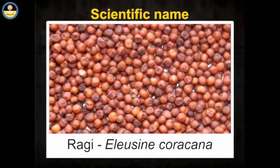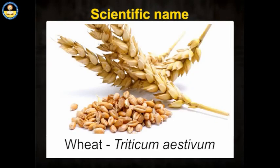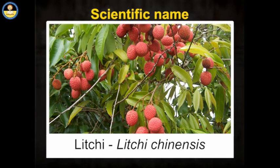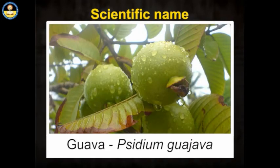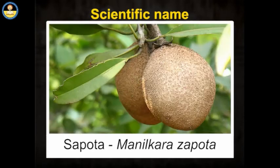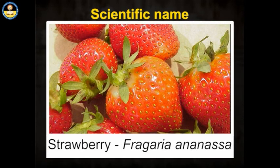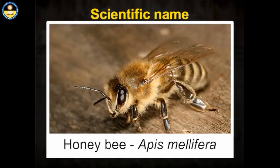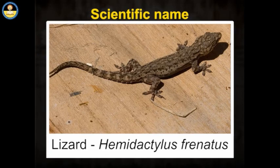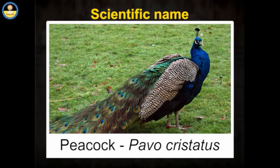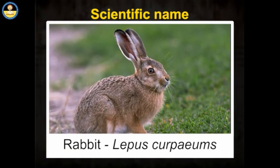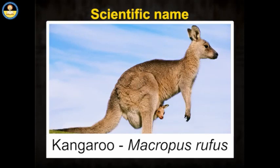Here are examples of scientific names of some common fauna and flora: Ragi — Eleusine coracana; Wheat — Triticum aestivum; Lychee — Litchi chinensis; Guava — Psidium guajava; Sapota — Manilkara zapota; Strawberry — Fragaria ananassa; Honeybee — Apis mellifera; Lizard — Hemidactylus frenatus; Peacock — Pavo cristatus; Rabbit — Lepus capensis; Kangaroo — Macropus rufus.